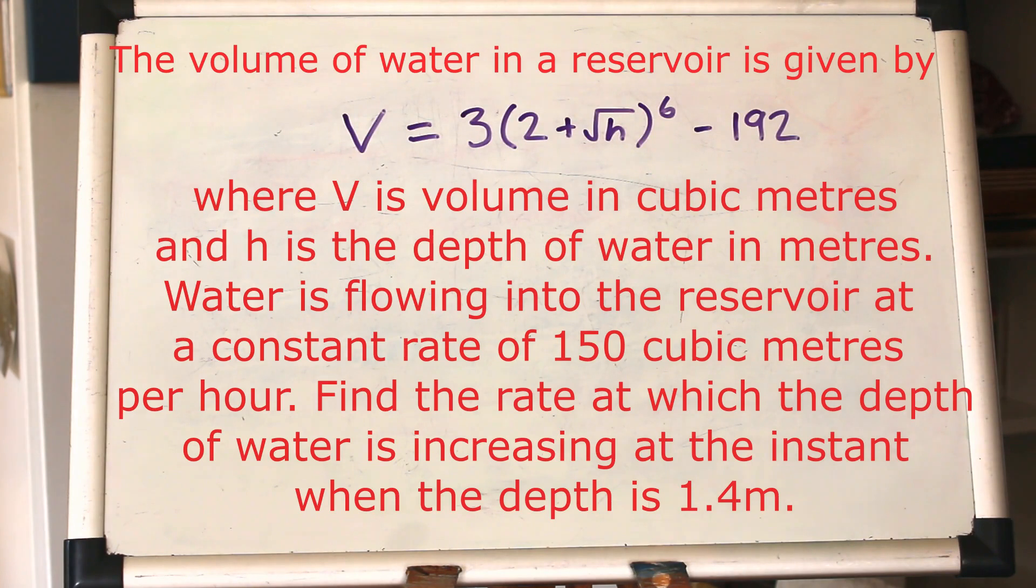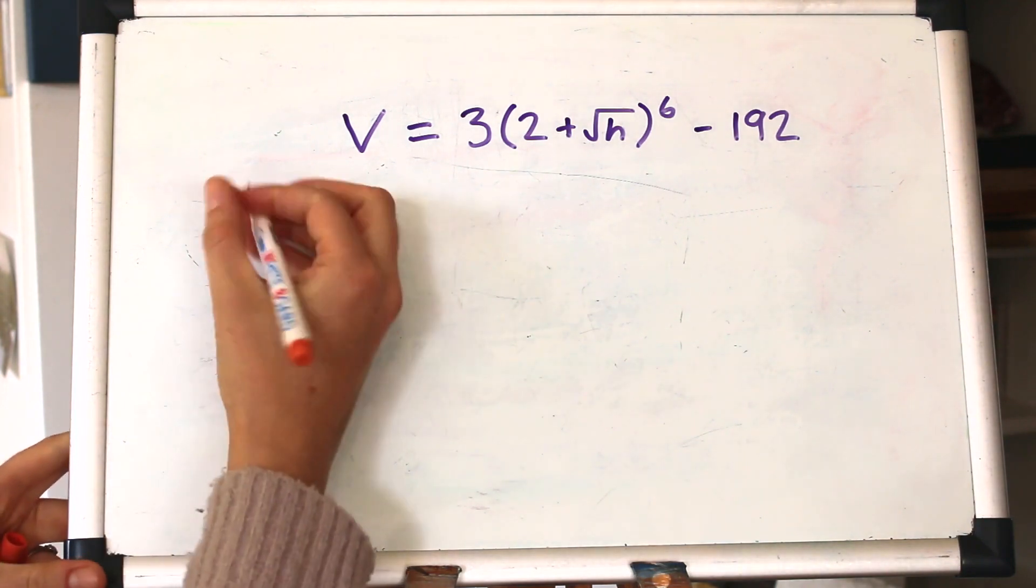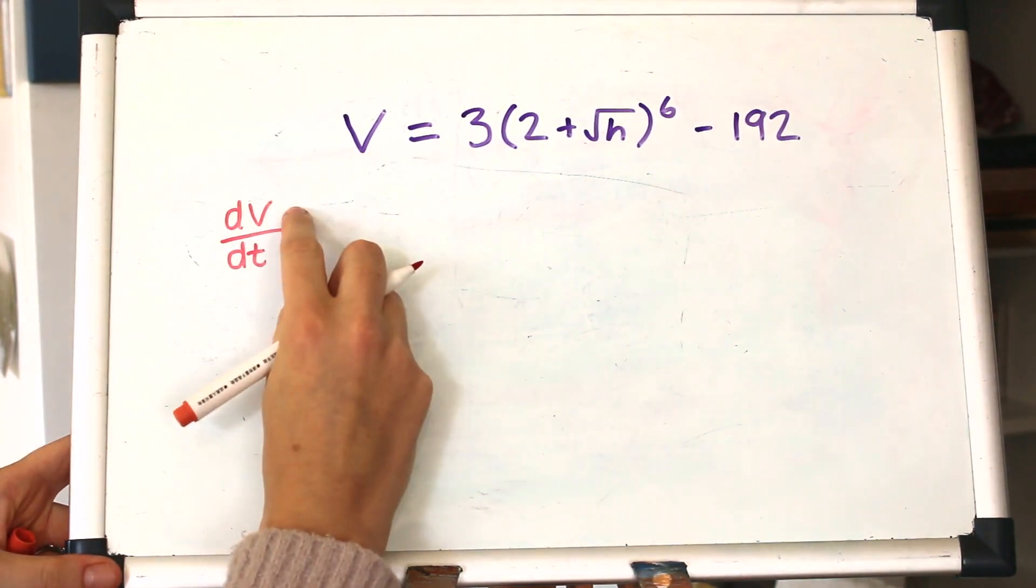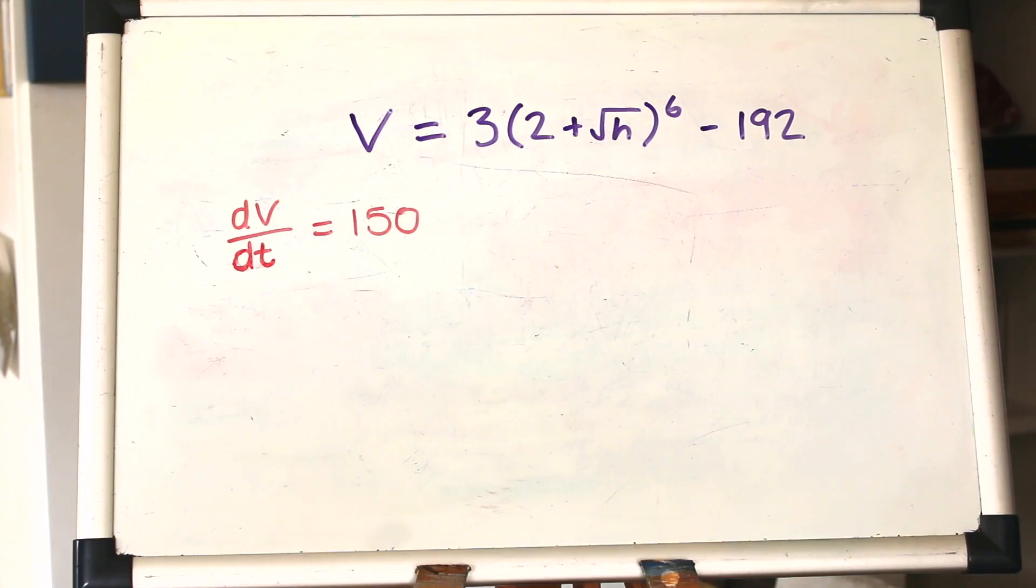Okay, here we've got the second question, again I'll leave the words up for a few moments. This is a question about water in a reservoir. We're told that water is flowing into the reservoir at a constant rate of 150 cubic meters per hour, so looking at the units there, it's to do with volume per hour, so it's going to be dV by dt. So picking out what we've been told, dV by dt, the rate of change of the volume, is a constant rate of 150.